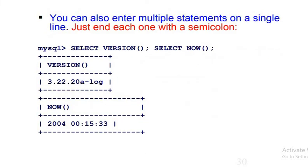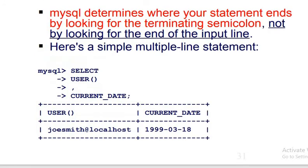You can enter multiple statements on a single line, just end each one with a semicolon. One semicolon means it's the end of the current statement, so we can have any number of statements like this. We can also have multiple line statements. Look at that: SELECT, press enter, USER(), enter, comma, enter, CURRENT_DATE, semicolon. The delimiter statement—delimiter is semicolon.